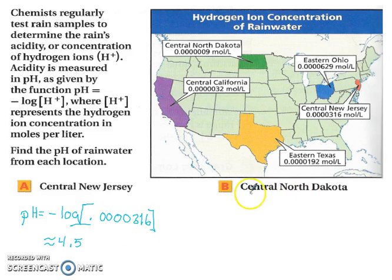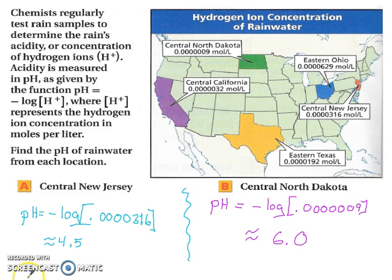On your own, try the one for central North Dakota. When you return to the video, the answer will be revealed. The pH level of central North Dakota is about 6.0. And that ends our video lesson on logarithmic functions.